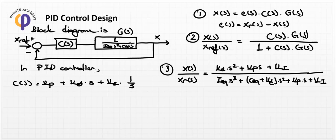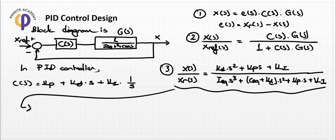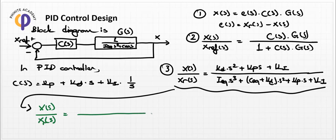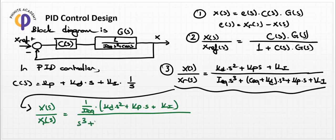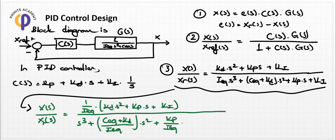To put this in proper standard form, we divide every term by I_x * K_d. The characteristic equation in standard form becomes: s^2 + (c_x + K_d)/I_x * s^2 + K_p/I_x * s + K_i/I_x. These are the general characteristic equation coefficients.